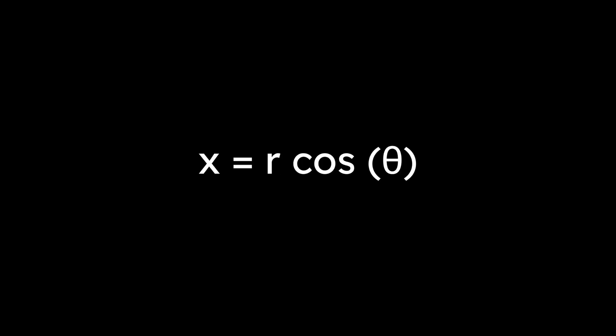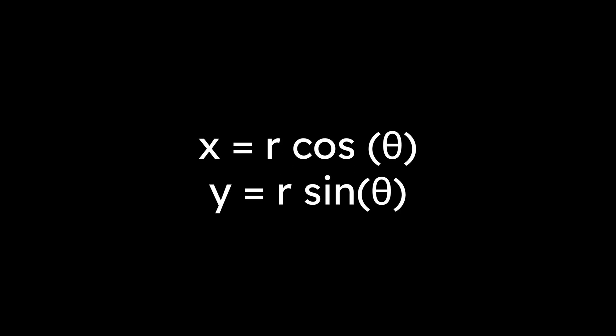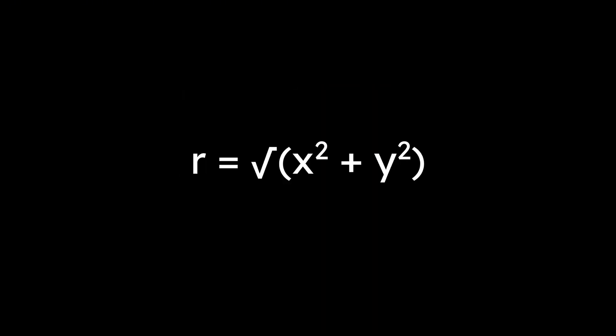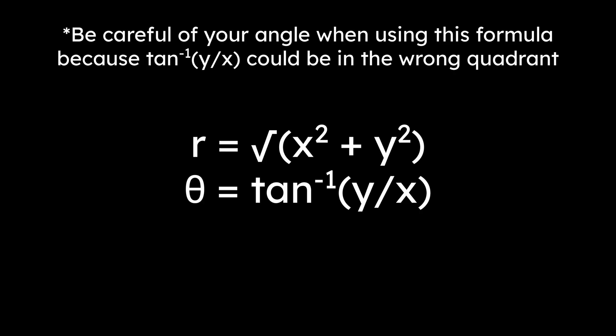To convert from polar to rectangular, use x equals r cosine of theta, and y equals r sine of theta. To convert back, use r equals square root of x squared plus y squared, and theta equals tan inverse of y over x.